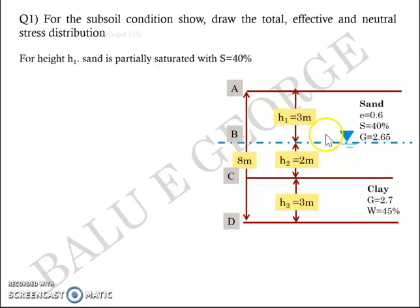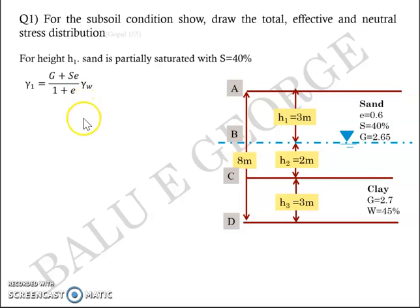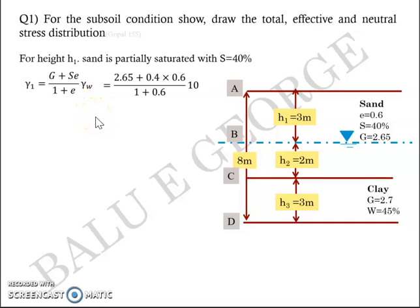To get the unit weight of sand above the water table, we use the equation: γ = [(G + S·e) / (1 + e)] × γ_W, from the three-phase system diagram discussed in the first module. With G = 2.65, S = 0.4, e = 0.6, and γ_W = 10 kN/m³, substituting gives a bulk unit weight γ₁ = 18 kN/m³.